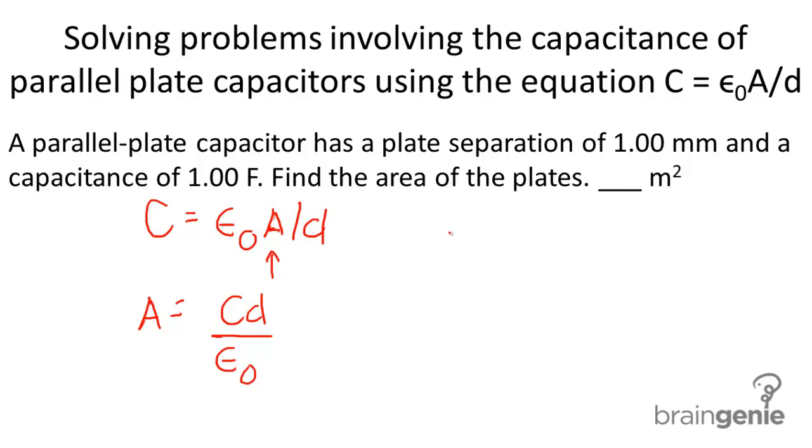Okay, so epsilon zero in this case is 8.85 times 10 to the negative 12 farads per meter and we have a capacitance of one farad and a separation D of one millimeter which is equal to 0.001 meters.